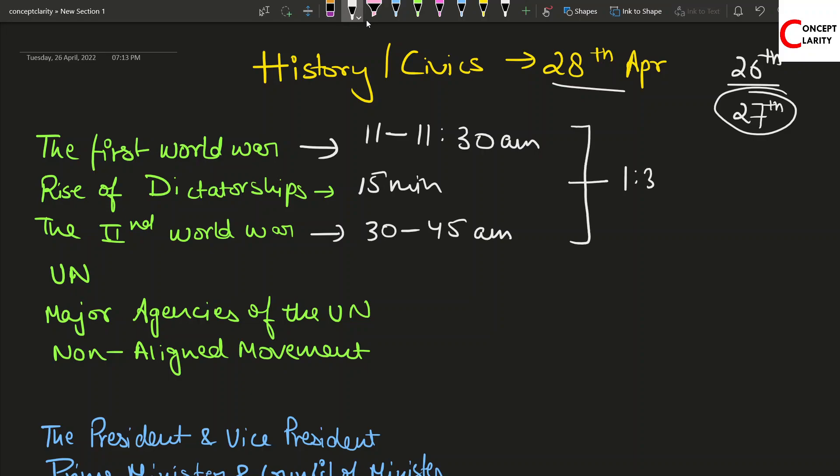By 1:30 PM you will be over with your first half of history. In the second half you can finish the UN major agencies. There is not so much coming here, just definitions and major agencies - what they are working and how they're elected. You can take around 90 minutes to study. If you go till 1:30, take a 30 minute break and come back at 2 PM.